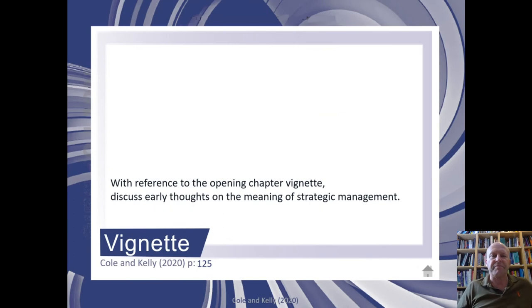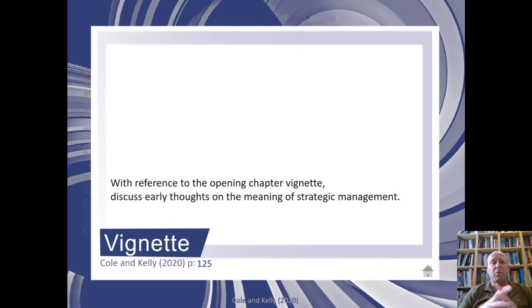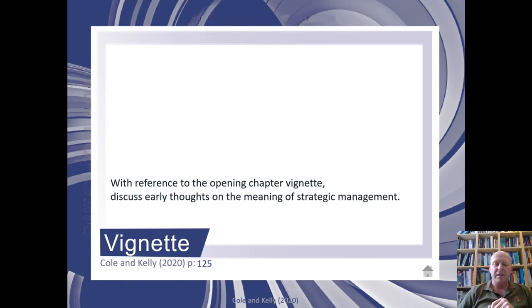Many different aspects of strategy and strategic management were highlighted in the animated video, and you'll have come across lots of different concepts and terms having read chapter 10. It's probably a good idea at this point to re-read the vignette on page 125 — pause the video, and if you know anybody else studying the course perhaps you could discuss early thoughts with them, trying to come to some agreement about the meaning of strategy and strategic management. Talk about how different terms have evolved throughout time. There are also lots of other ideas about strategic management that weren't mentioned in this outline but will be covered later in the book.